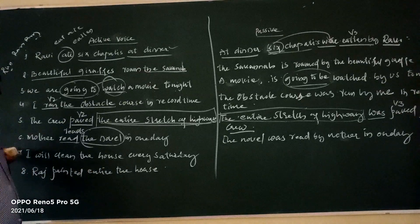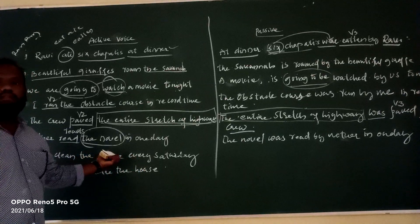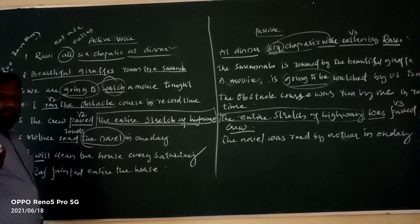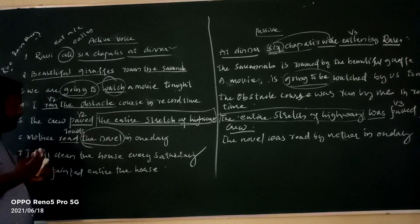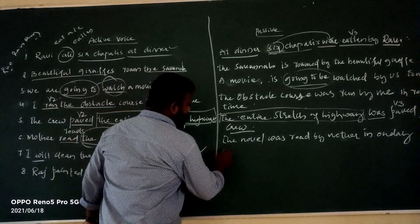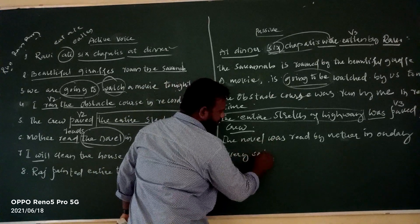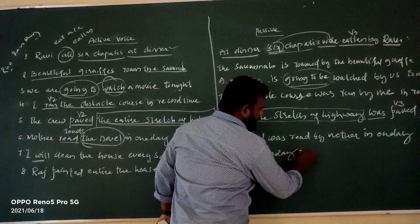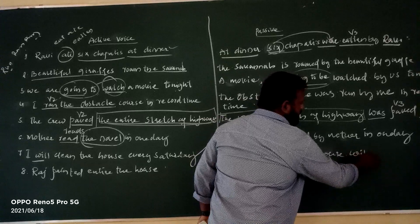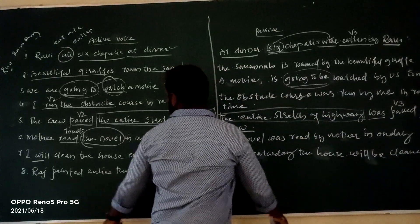Example seven: 'I will clean the house every Saturday.' This example is in simple future tense. When changing from simple future active to passive, it becomes future continuous. The passive form is: 'Every Saturday the house will be cleaned by me.'